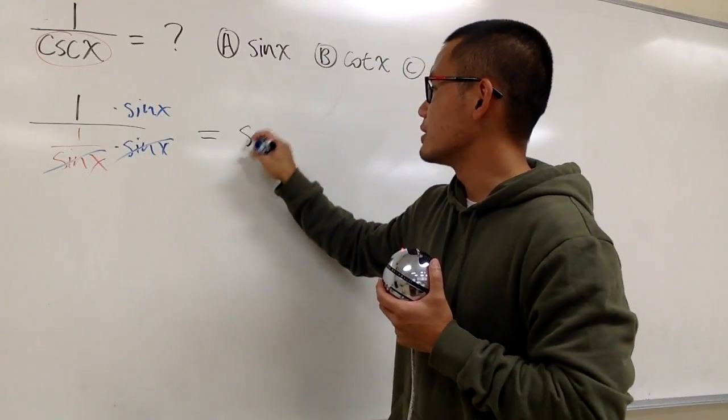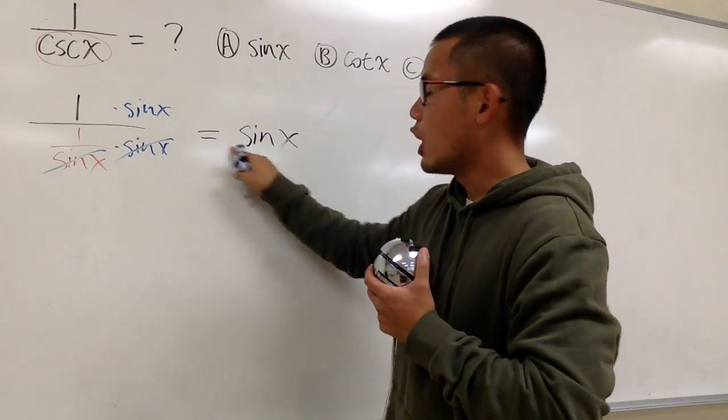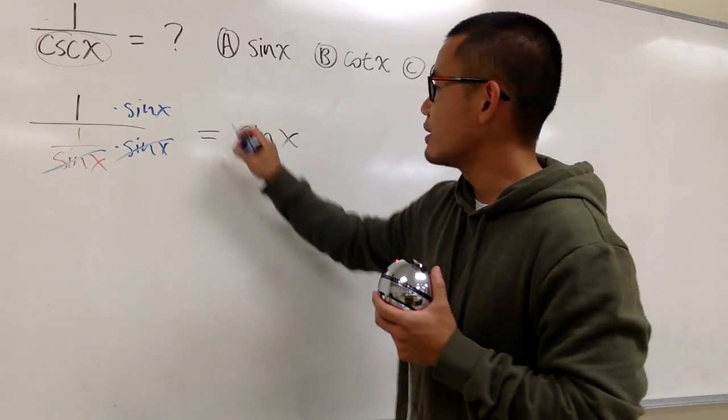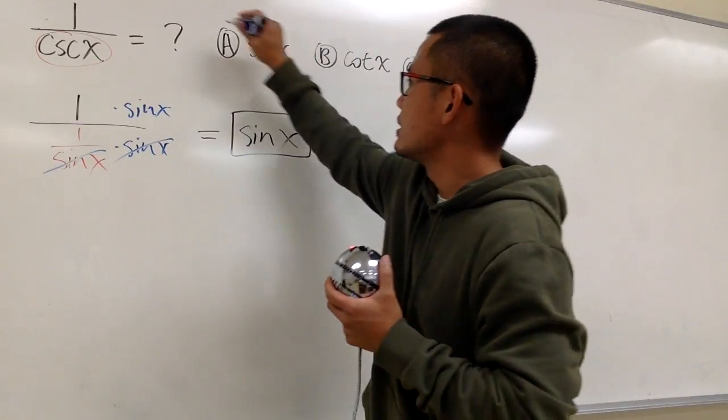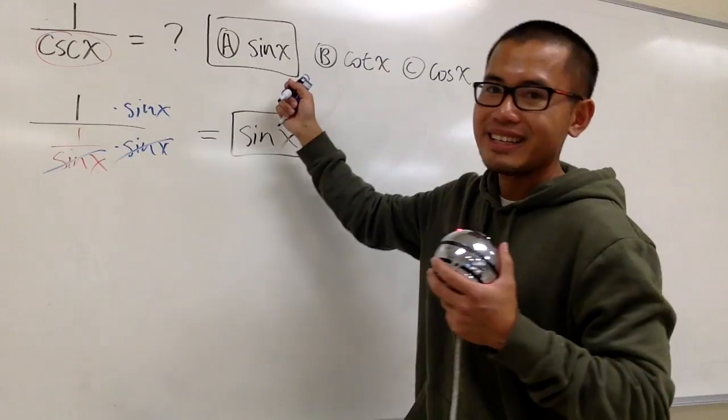1 times sine x is just sine x over 1, which doesn't matter, so this is it. And that's choice A. That's it.